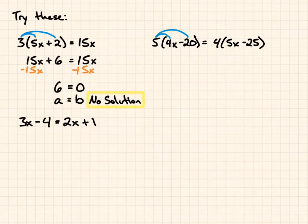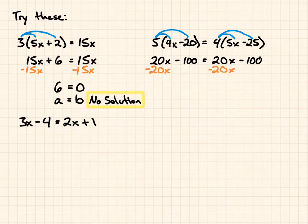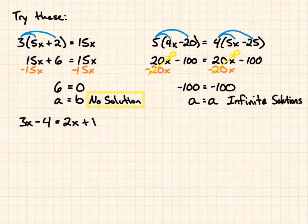Then, for our second one, use the distributive property. And you'll notice something as you start to solve it. You'll notice that both sides are identical. I end up with negative 100 equals negative 100. That's an a equals a. That's an infinite number of solutions. Whatever value, no matter negative, positive, you put in there, you're going to end up with it being true. One side is going to be equal to the other.